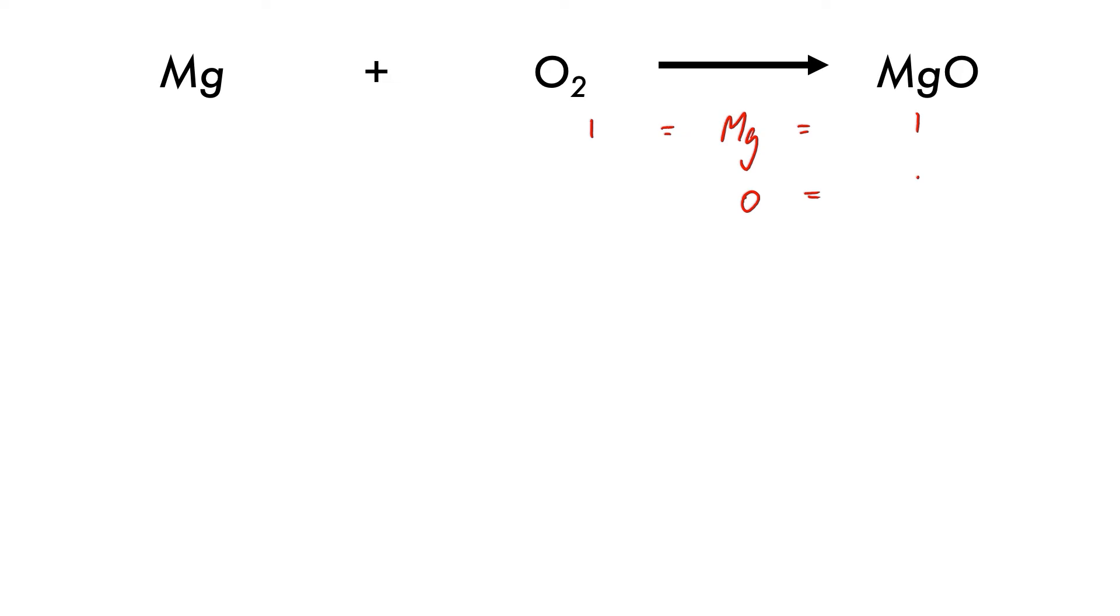Oxygen then. We have one on the product side, but two on the reactant side. Now oxygen always comes as O2, which means that in our products, we must have an even number of oxygens.